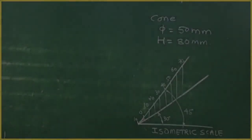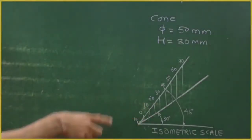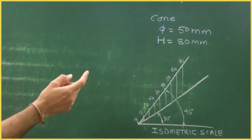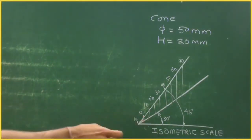So first we will start with isometric scale. First we will draw the required isometric scale, we have to draw till 80. So we will take 0 to 70 and 0 to 10 for the dimension.